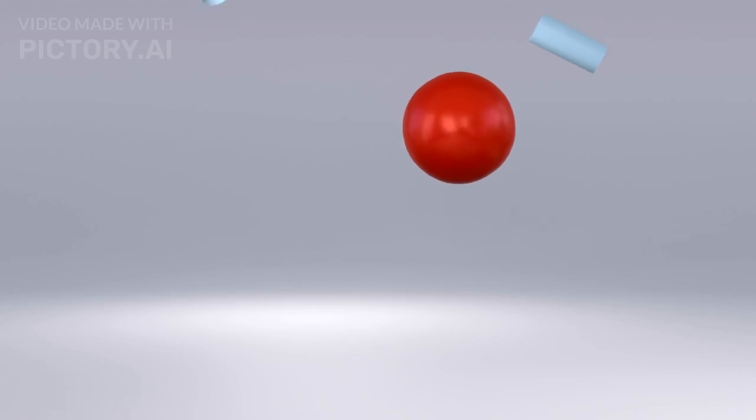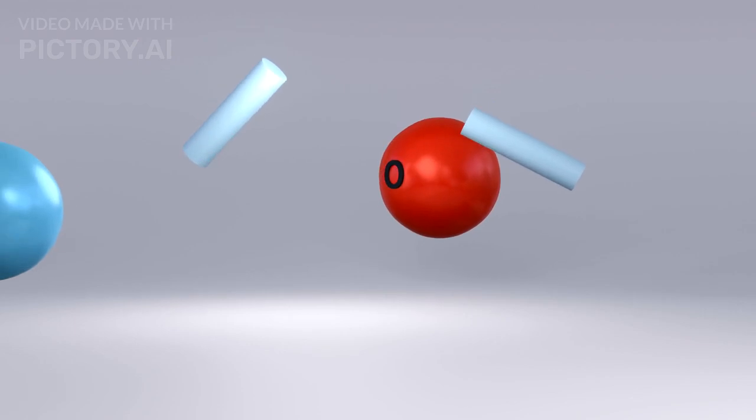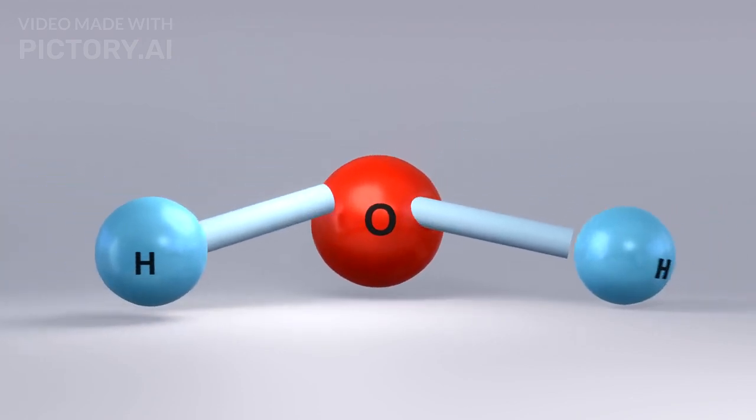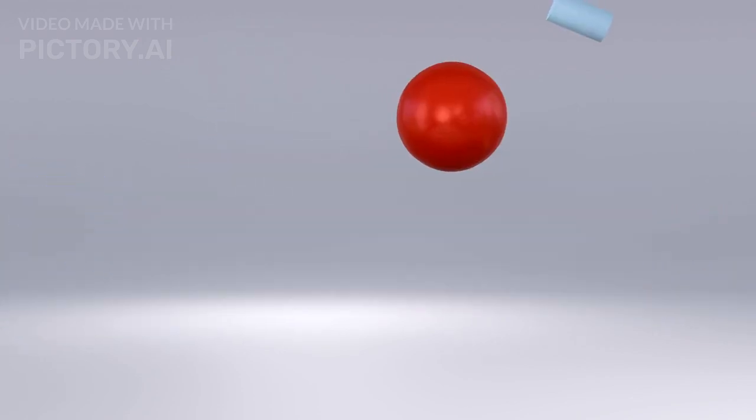Oxygen plays a crucial role as the final electron acceptor in the chain. It combines with electrons and protons to form water, ensuring the flow of electrons through the chain.